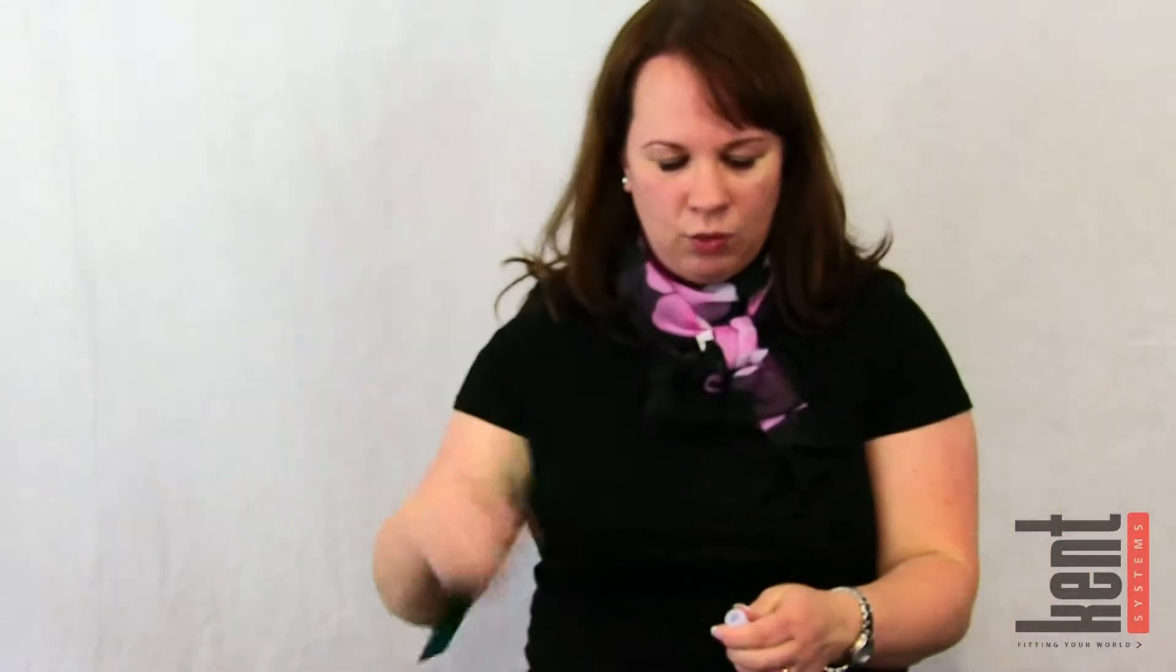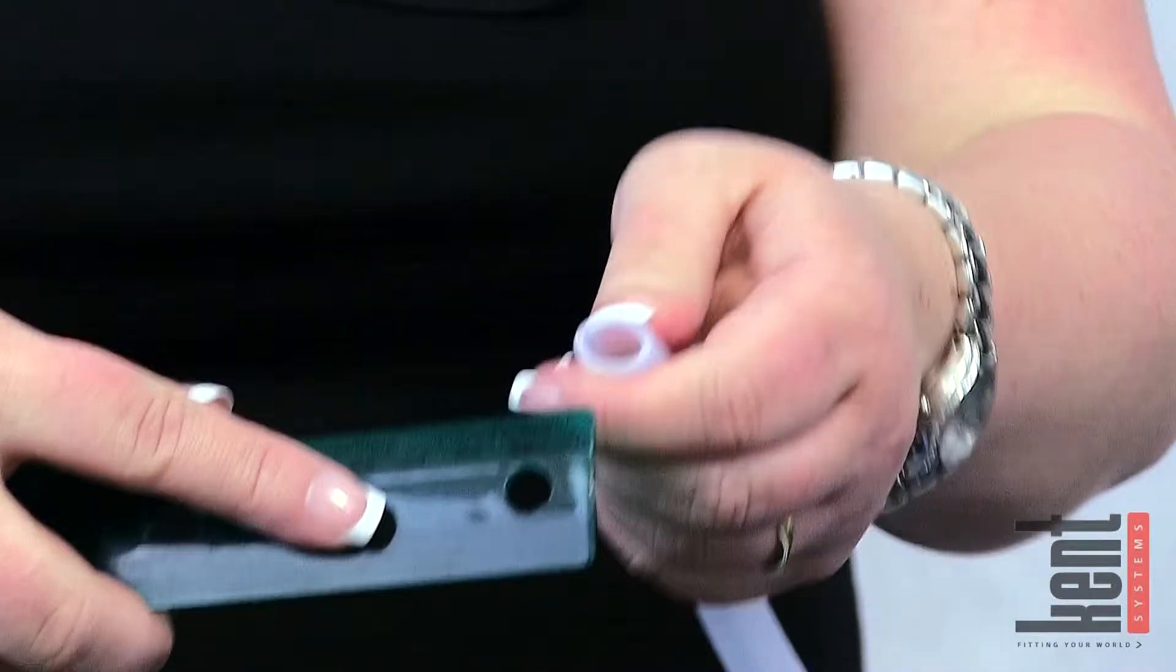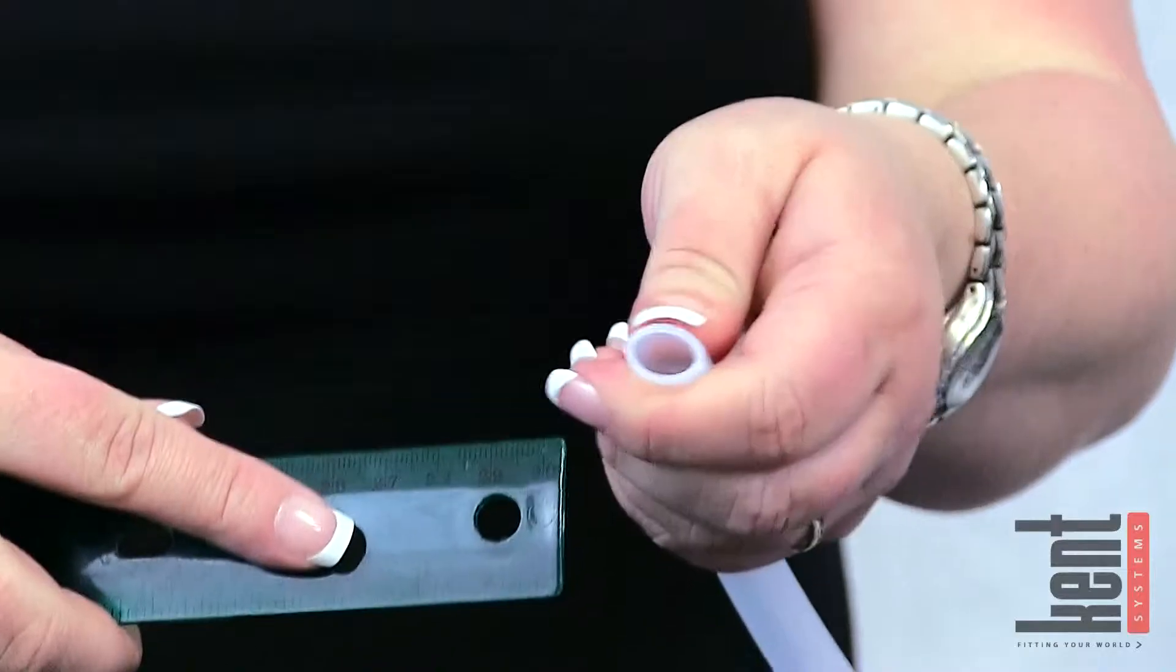A lot of times customers will take a ruler and they'll try to measure, but unfortunately this is not exactly accurate because it's a little squishy. Your tube can squish and it'll give you the wrong size.